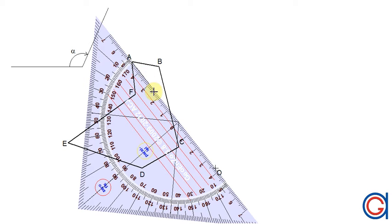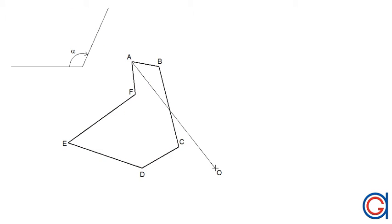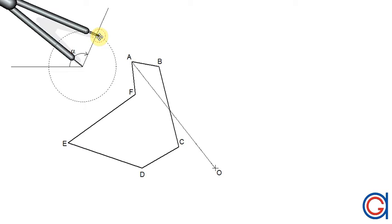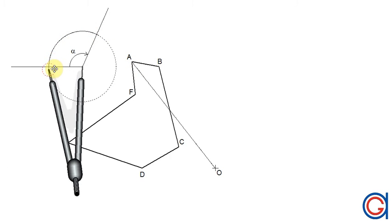The first step is to join points A and O. Now from this line segment we are going to transport the angle alpha. To do this, setting the compass on the vertex of the angle alpha and setting it to any random radius, we are going to describe an arc which is going to intersect the sides of the angle at two points.